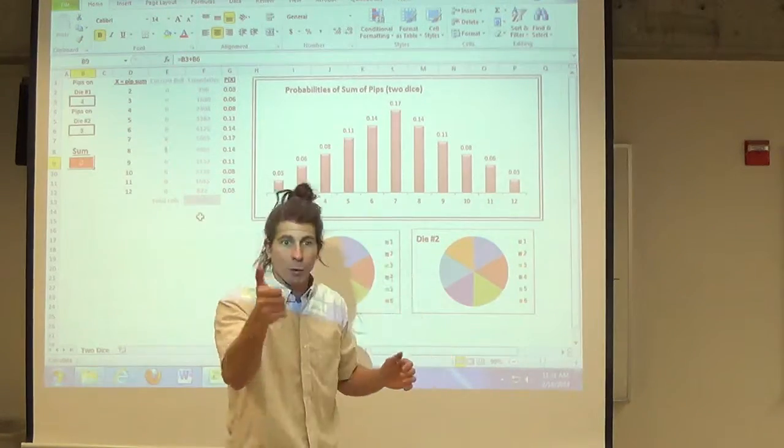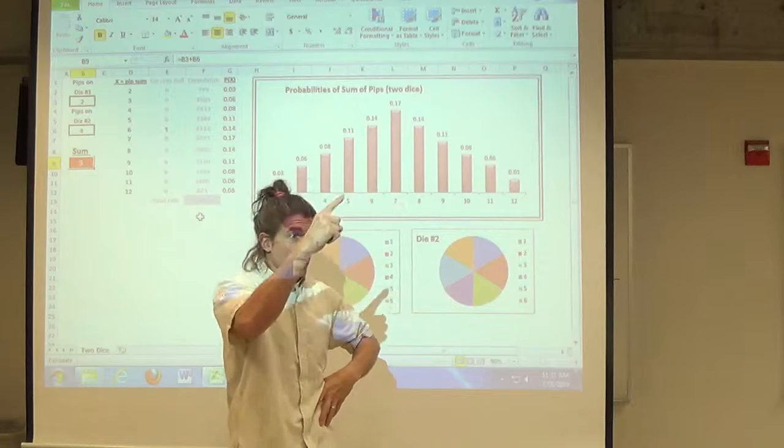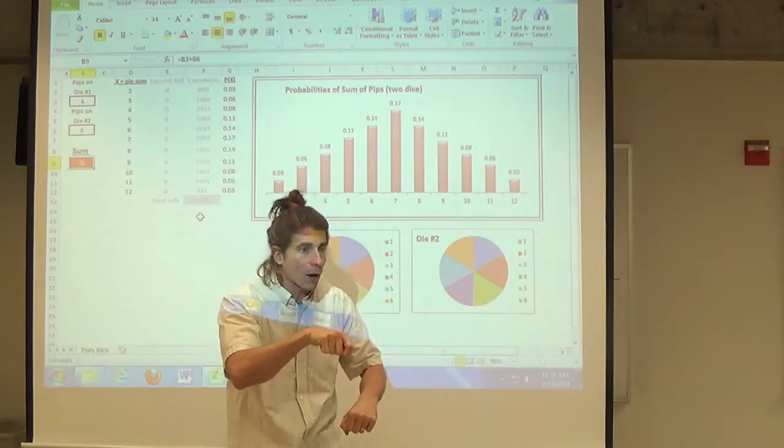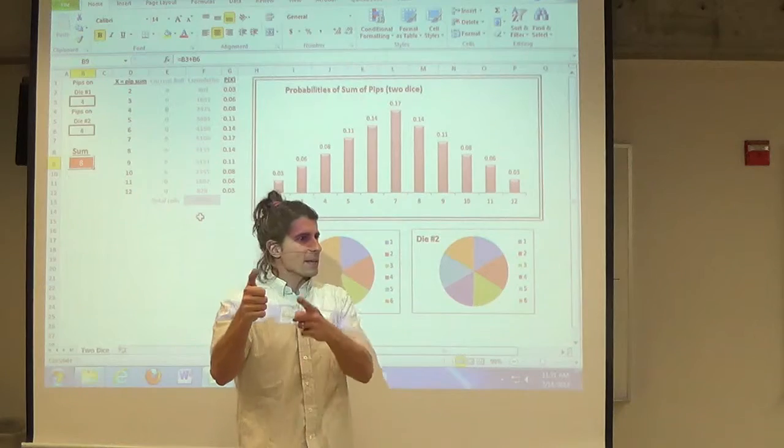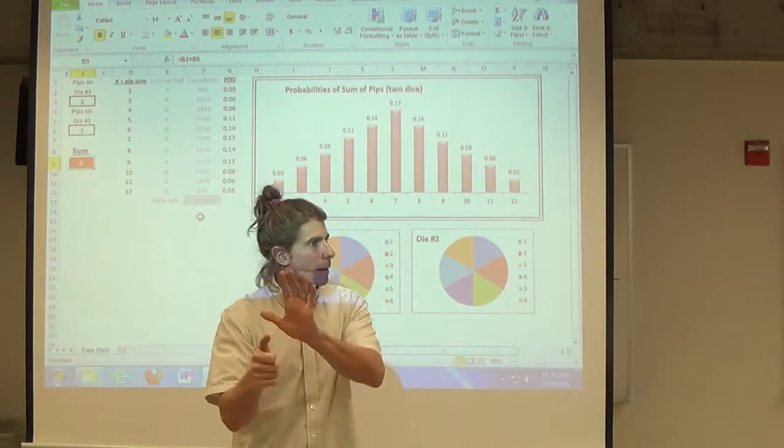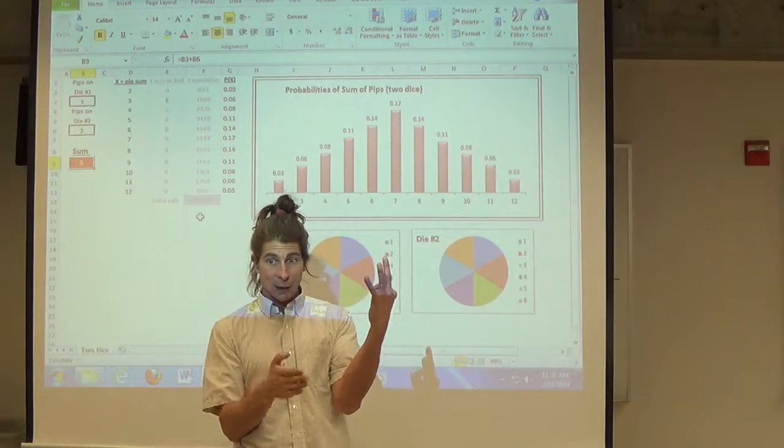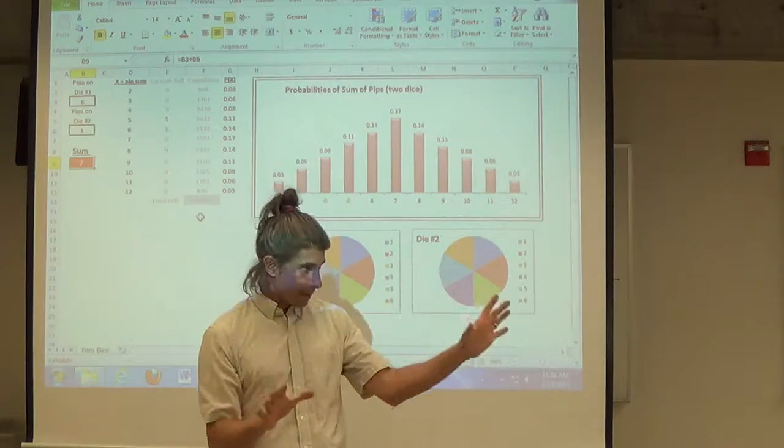So let's suppose you flip heads right away. That's one, write down one. Then flip again. Suppose you get heads right again, write down one again. Then flip again, maybe it's tails. Then flip again, maybe it's tails again. Then flip again, maybe now it's heads. That's three because you went tails, tails, heads. Does that make sense?